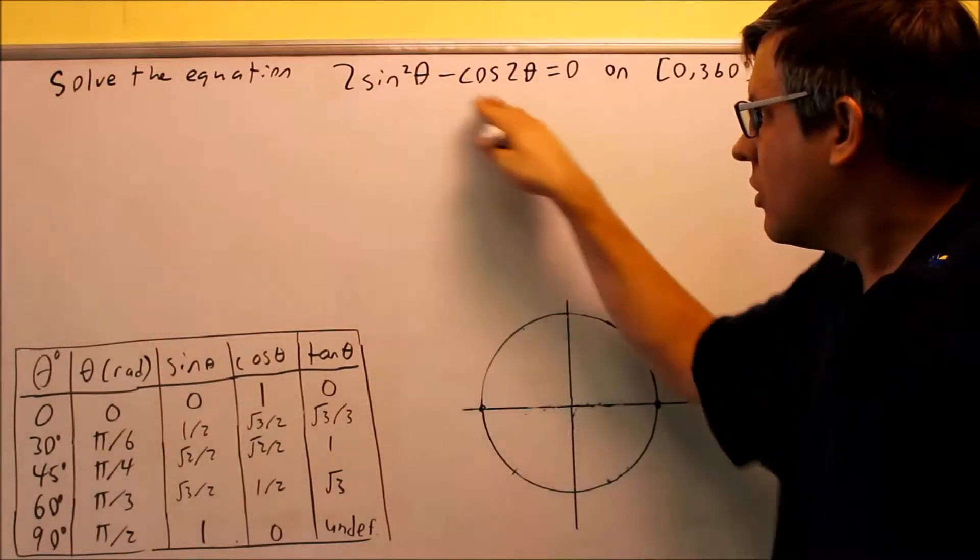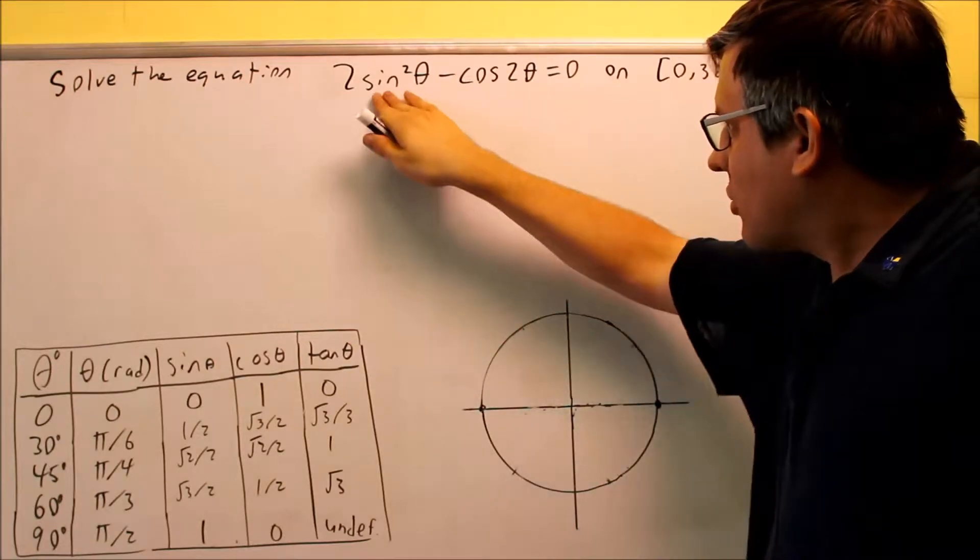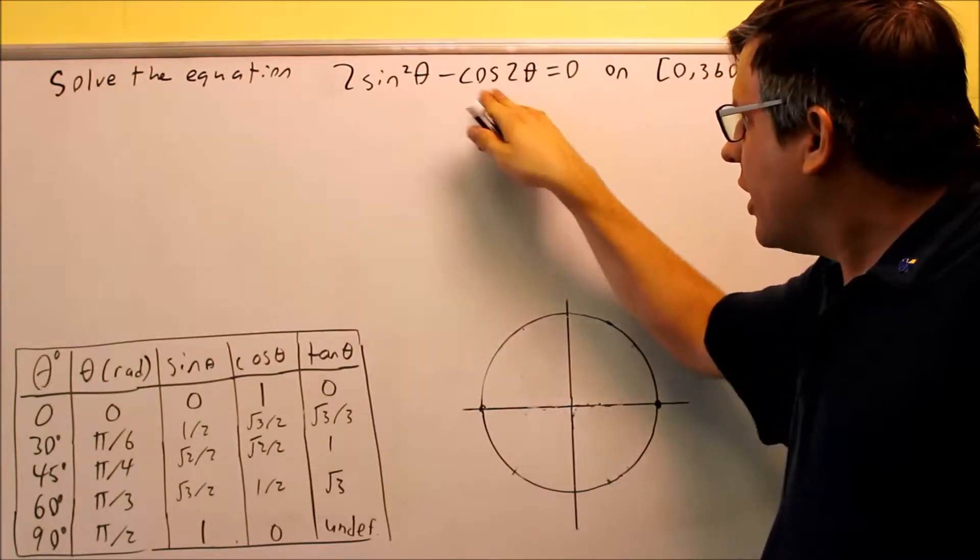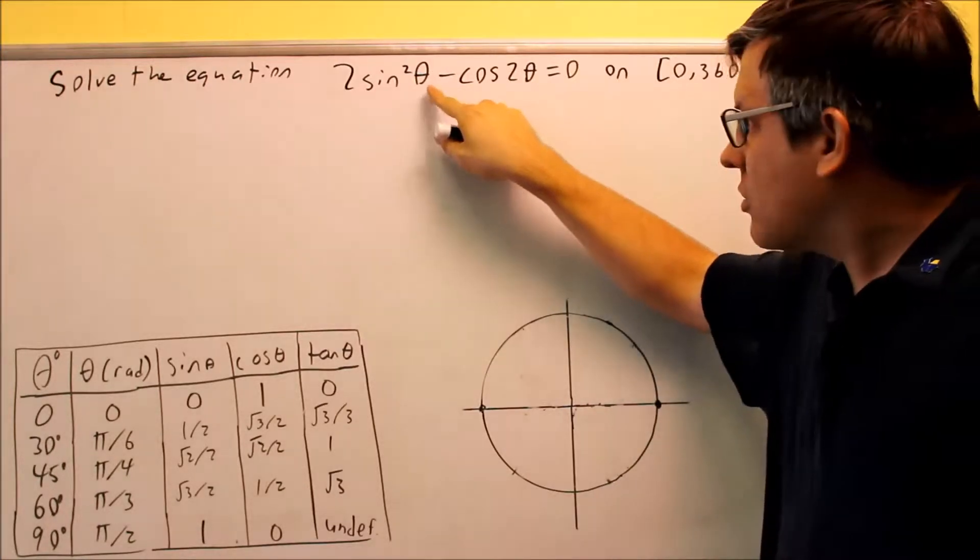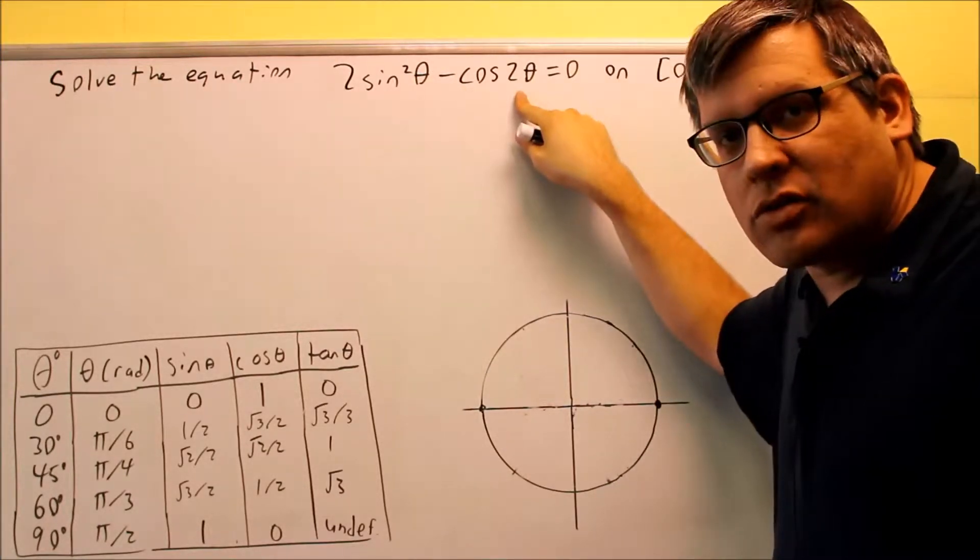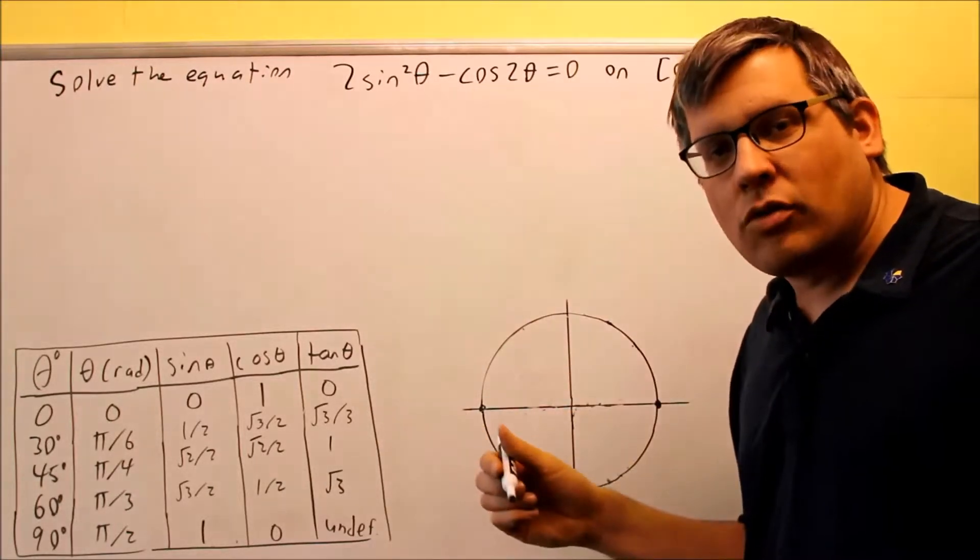This problem has two terms. However, there's no like terms because this is sine squared and this is cosine. Even if they were both sine, we still couldn't take anything out because one is theta and one is 2 theta. To take something out, it's got to be the same trig function and the same angle inside.